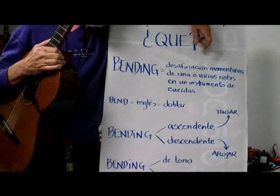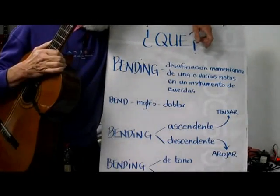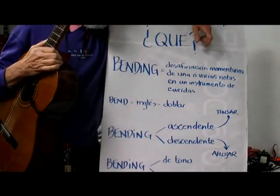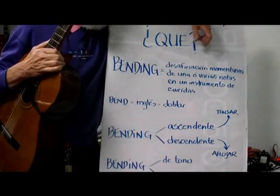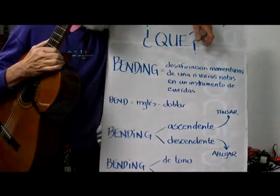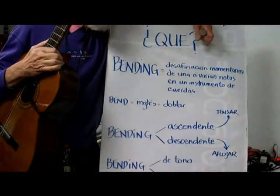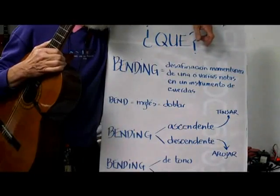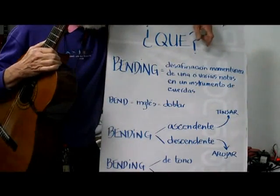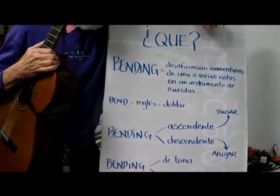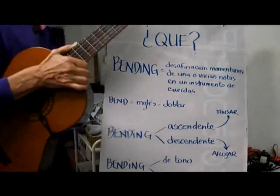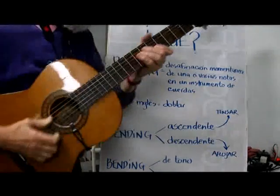It can be done on all string instruments, but on some instruments it is more typical than others. For example, on electric guitar, acoustic guitar, and also Spanish guitar, you can do bendings. On others too, but it is not as typical. Here we have an example.